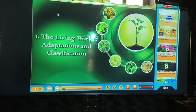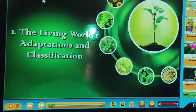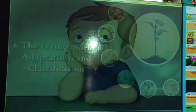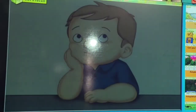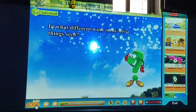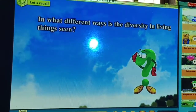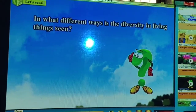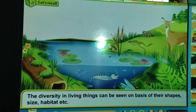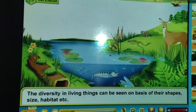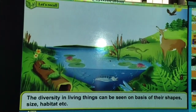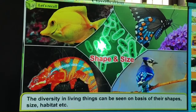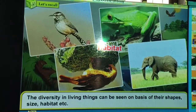Chapter 1: The Living World — Adaptations and Classification. Let's recall: in what different ways is the diversity in living things seen? The diversity in living things can be seen on the basis of their shapes, size, habitat, etc.